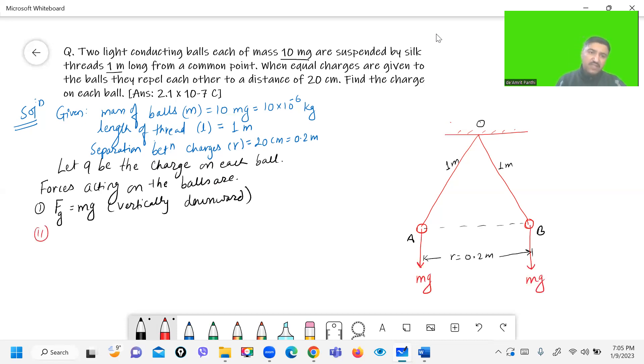And another force is electrostatic force of repulsion between charges, it's 1 upon 4 pi epsilon naught, Q square by R squared. So it takes away from each other.